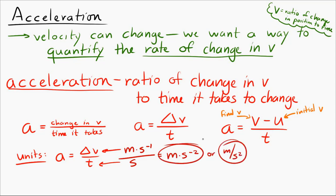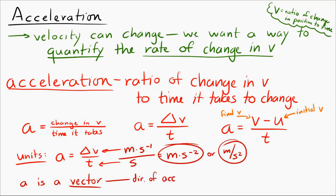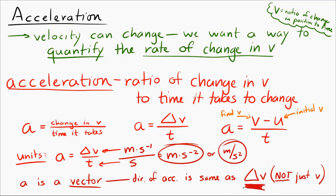Acceleration is a vector — it has a direction. The direction of acceleration is a little bit tricky. The direction of the acceleration is the same as the direction of the change in velocity. That's important: acceleration is not in the same direction as velocity; it's in the same direction as the change in velocity. We'll see what that means a bit later.